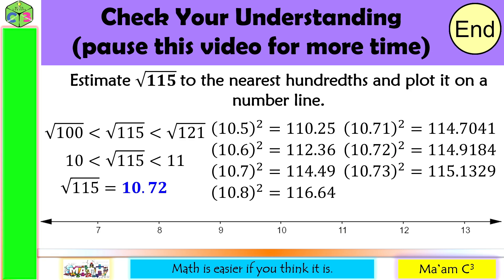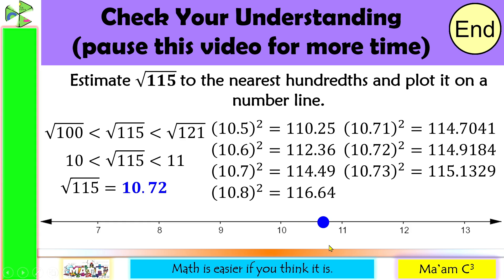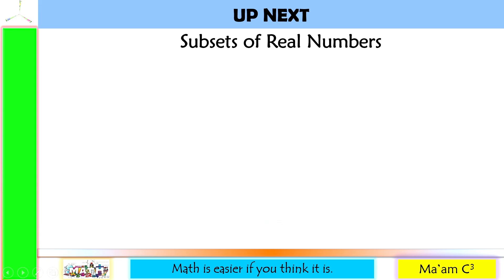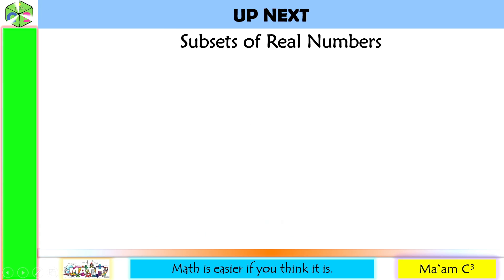Now let us plot it on a number line. Here is 10 and here is 11. So 10.72 is closer to 11 than to 10. Our next lesson is subsets of real numbers.